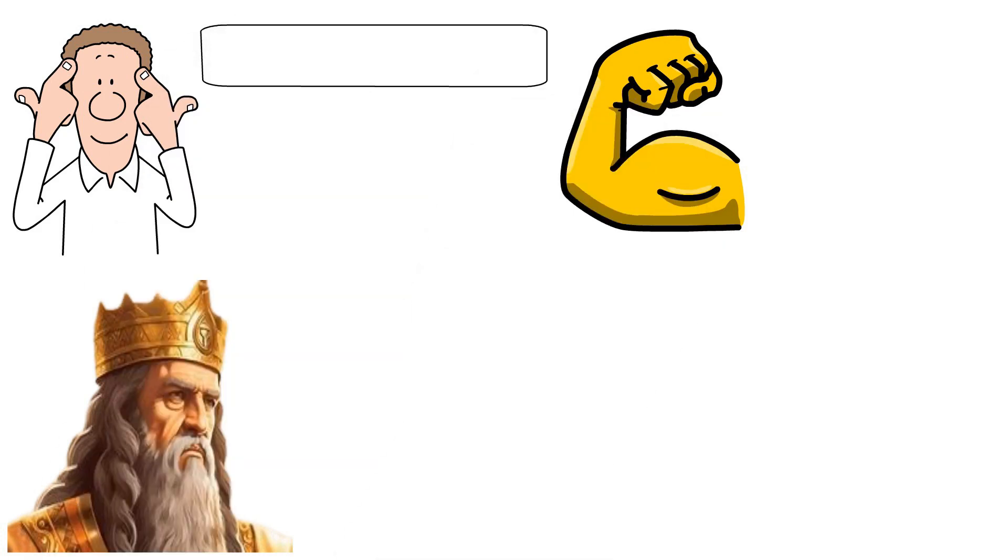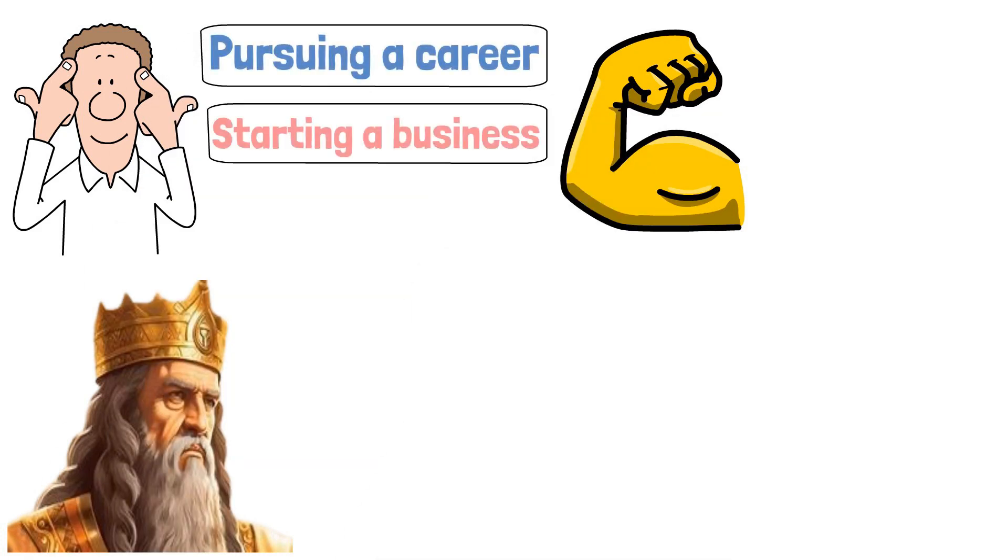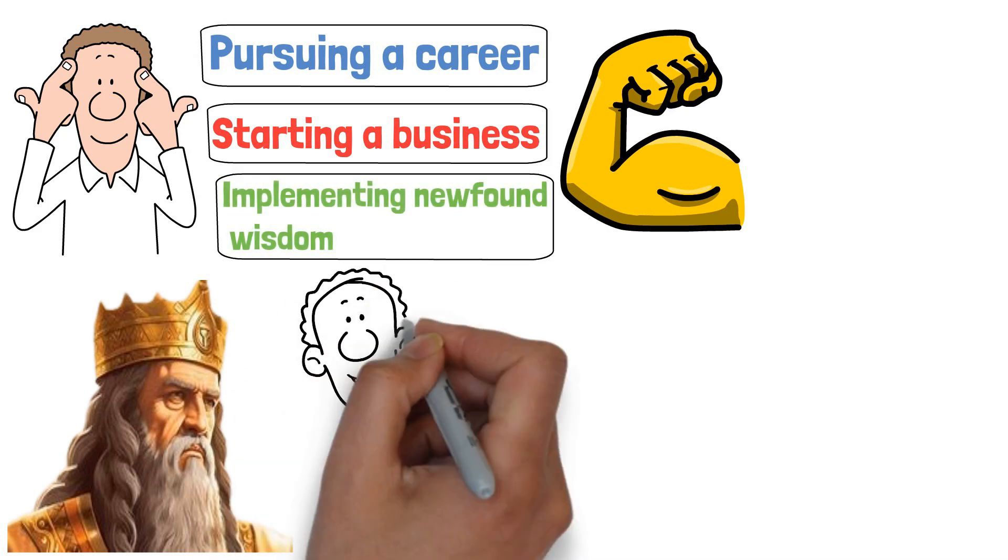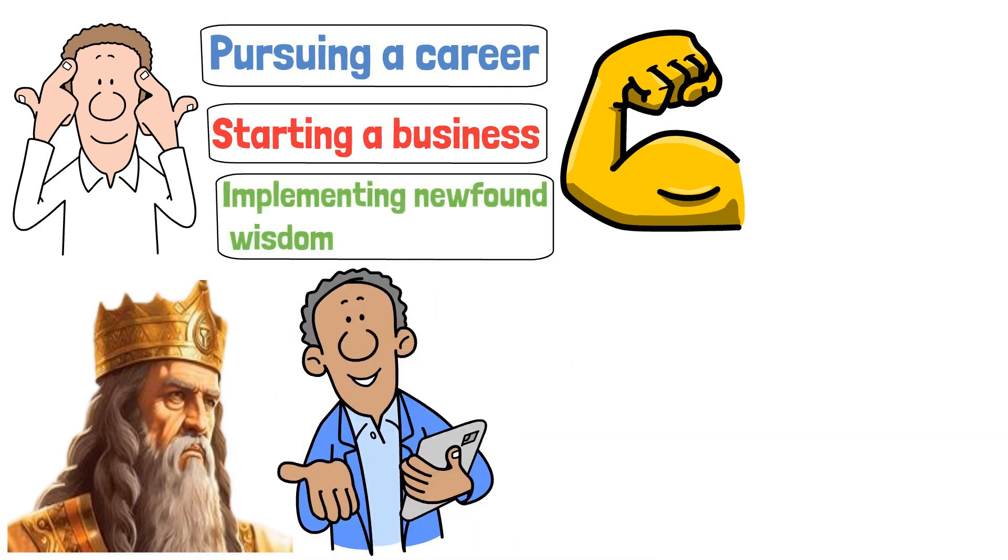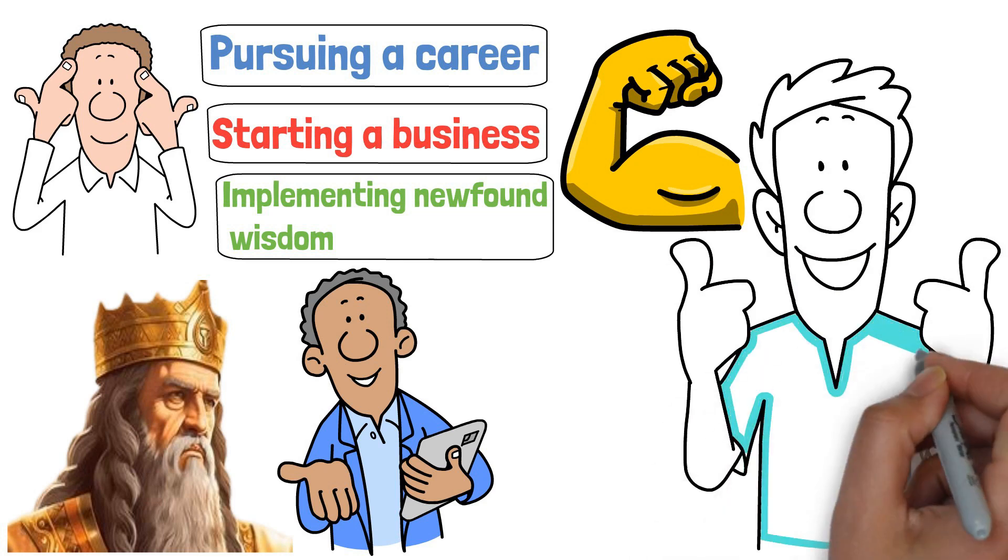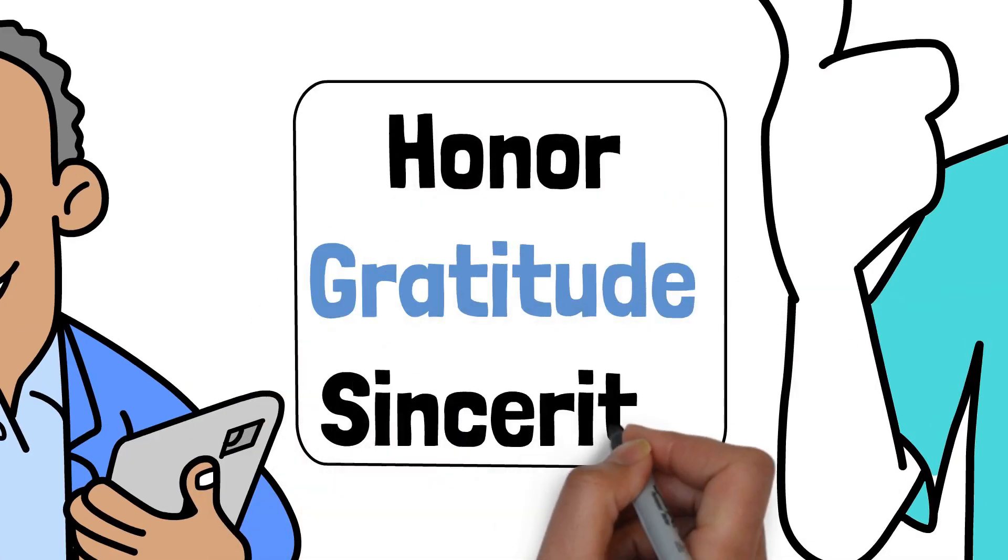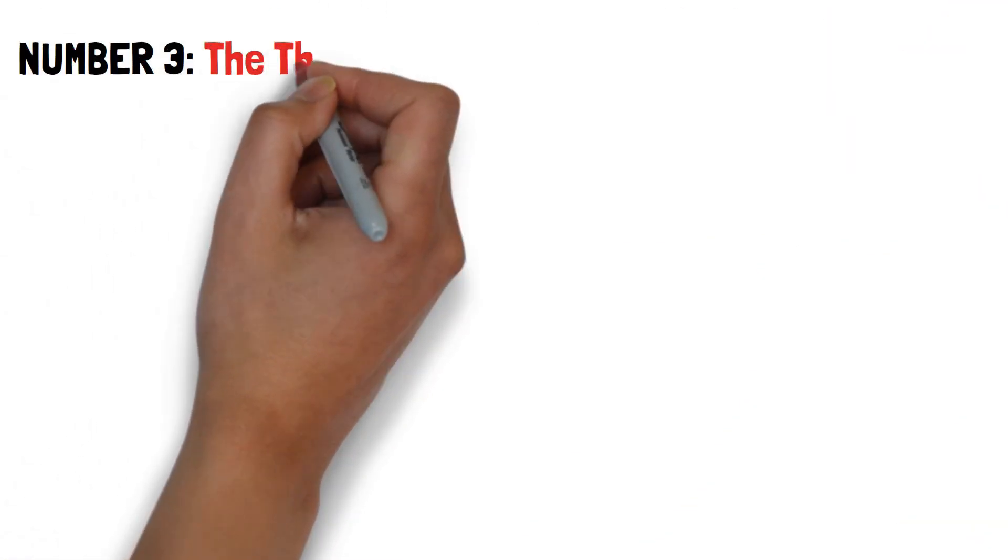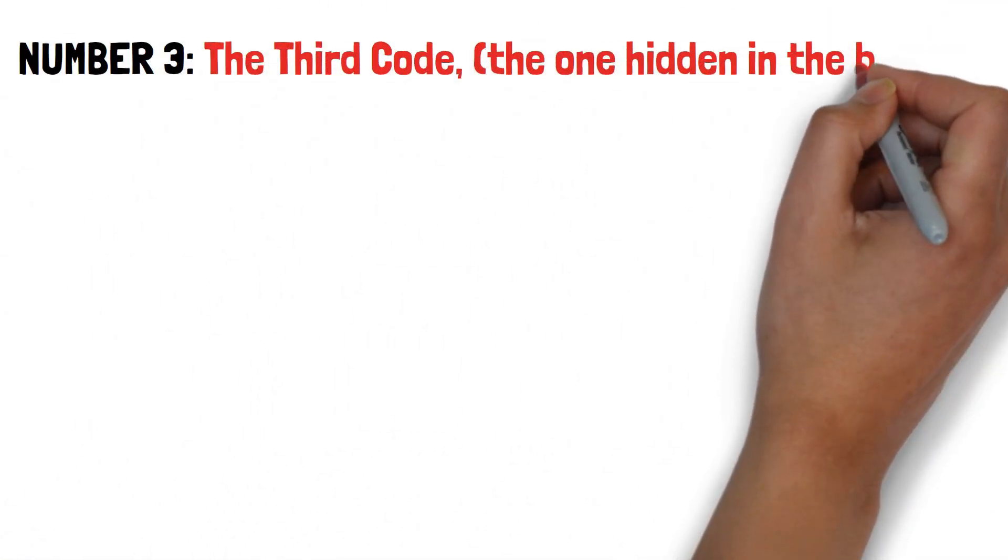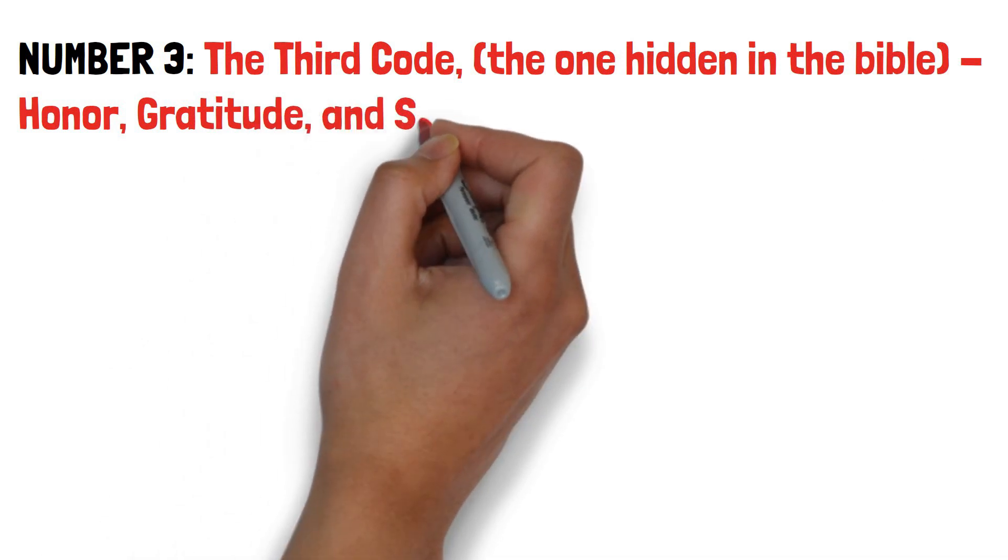Whether it's pursuing a career, starting a business, or implementing newfound wisdom, diligent hands are the bridge between knowledge and prosperity. Now, let's dive into the final code, an almost imperceptible element intertwined with honor, gratitude, and sincerity. Number three, the third code, the one hidden in the Bible, honor, gratitude, and sincerity.